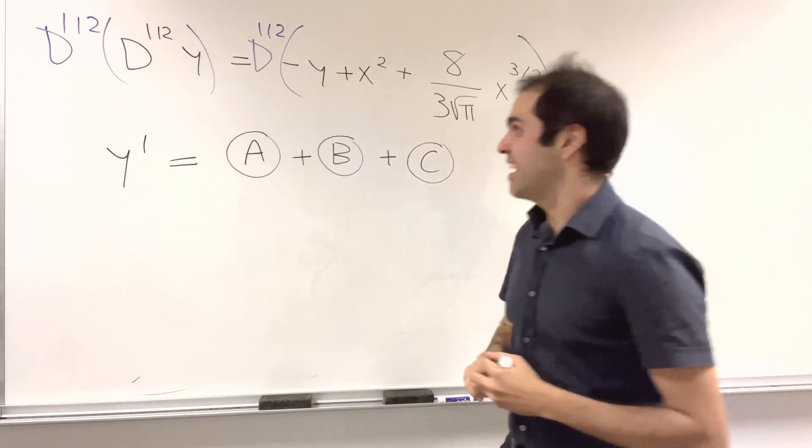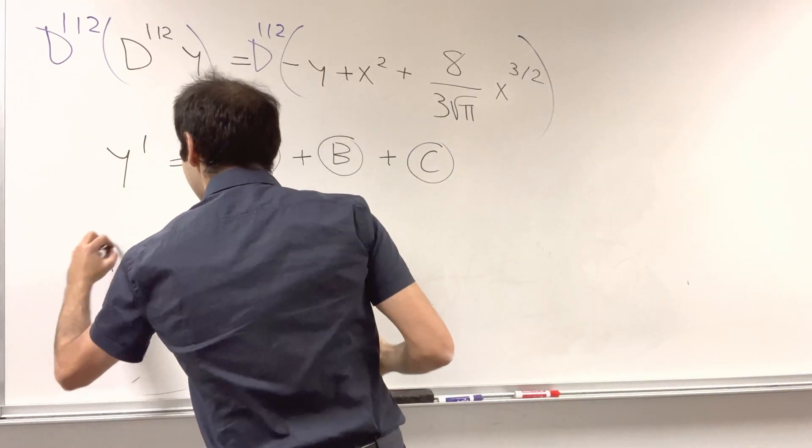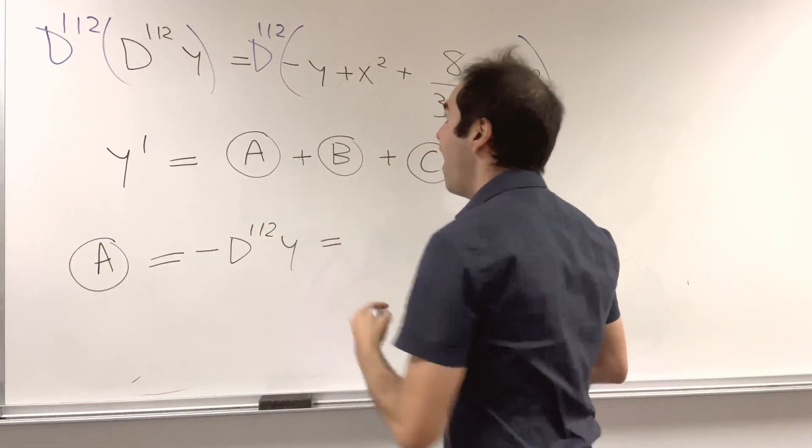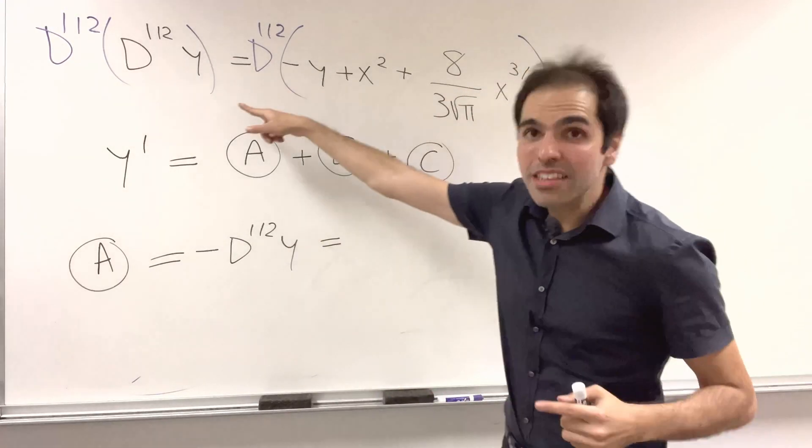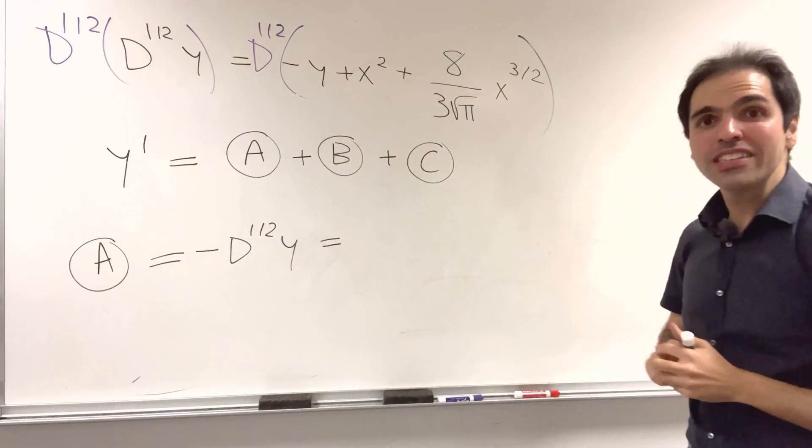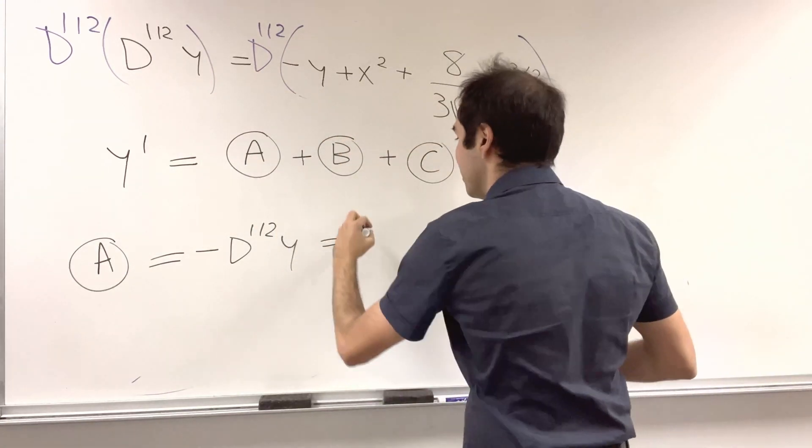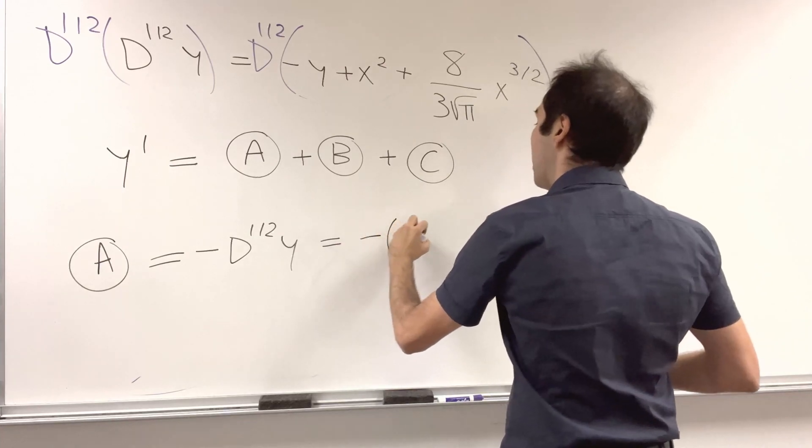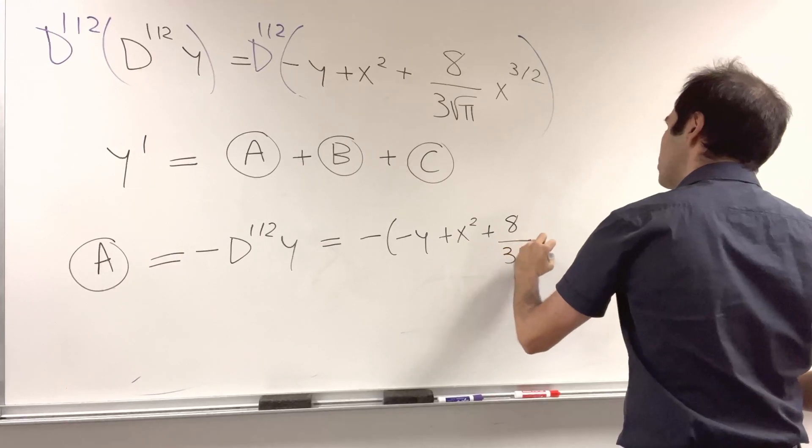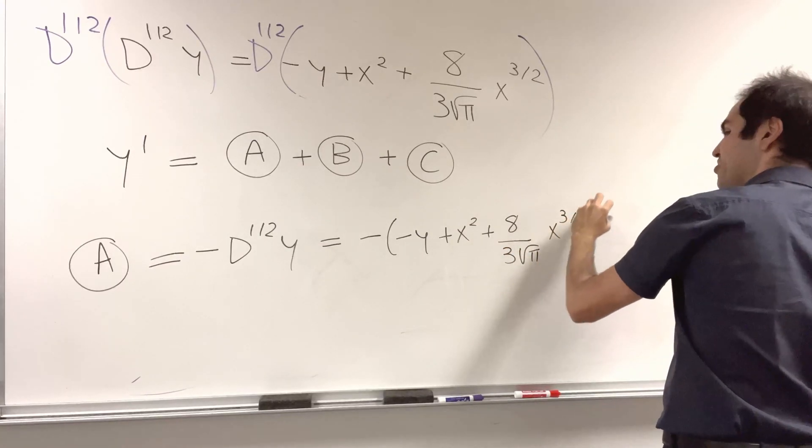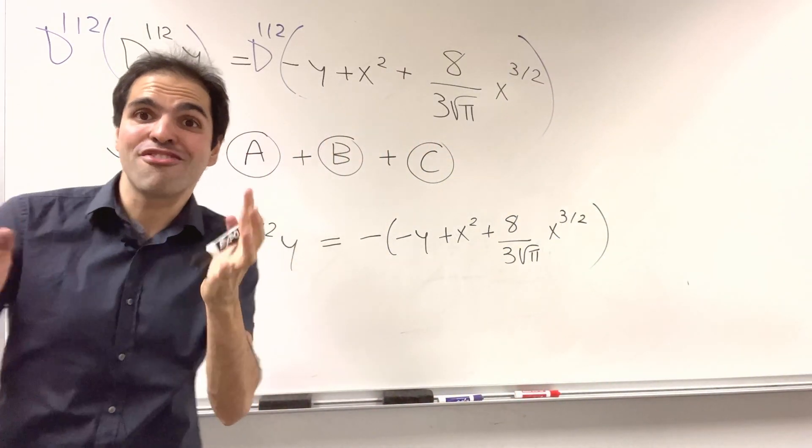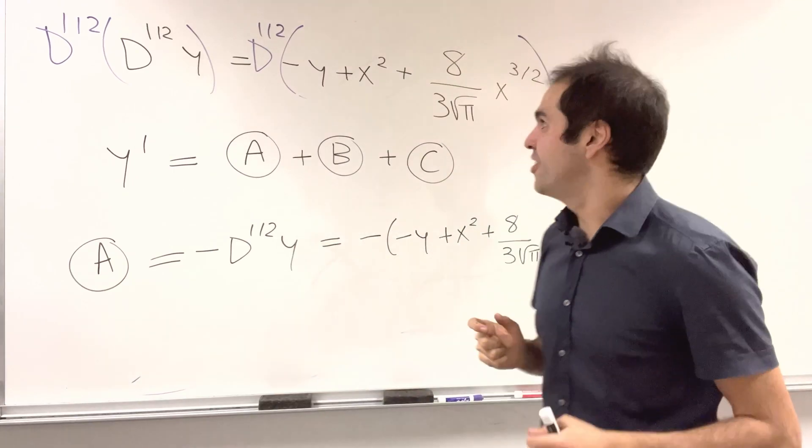Now, the first term is actually not that bad, because A is minus half derivative of y, but notice the equation itself tells you what the half derivative of y is. It is minus y plus x² plus 8 over 3√π, x to the three halves. It's kind of nice, that is a differential equation, it tells you something about the derivative.